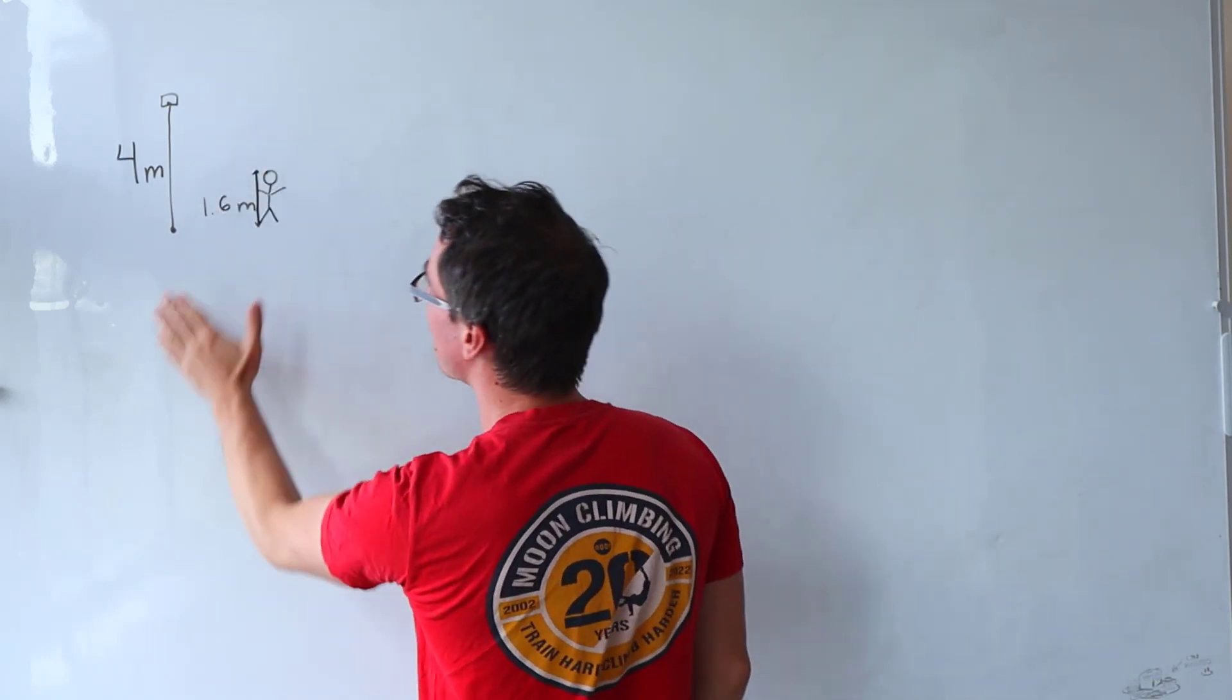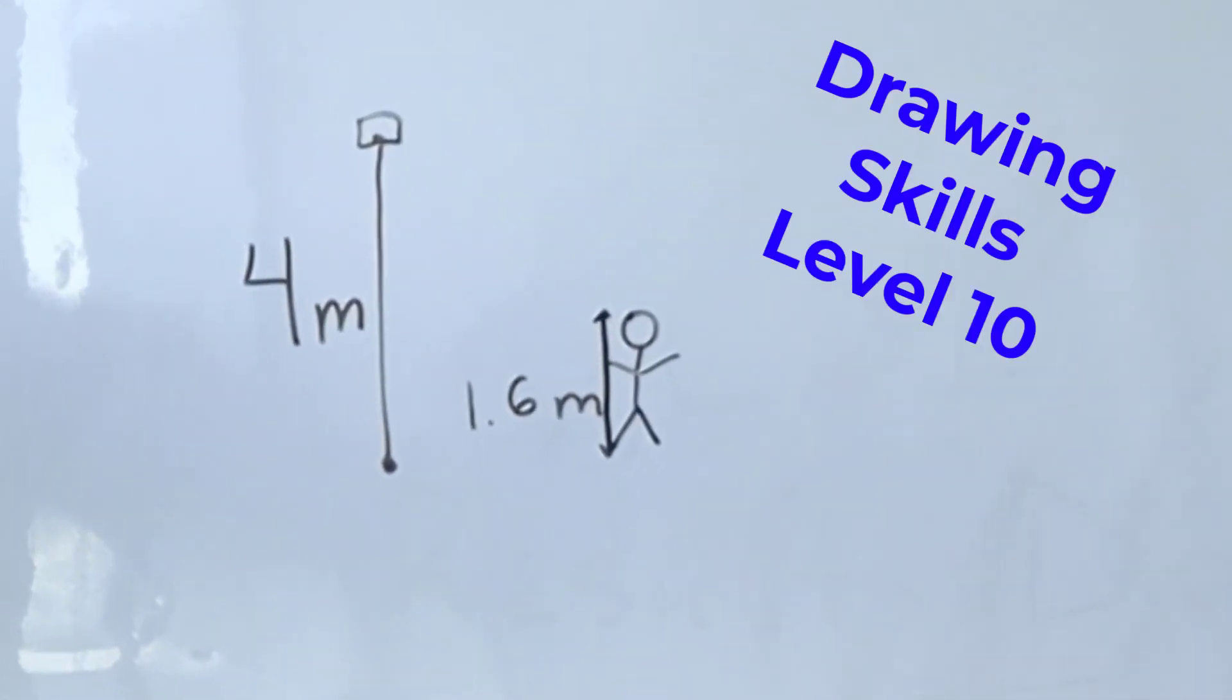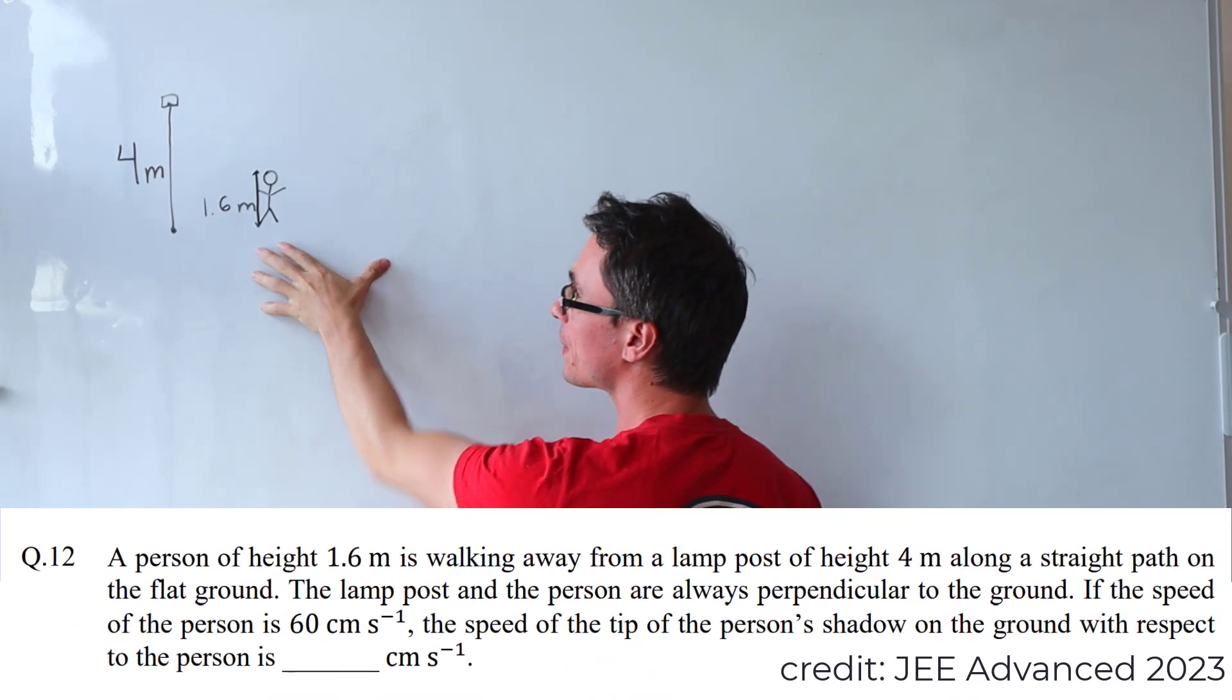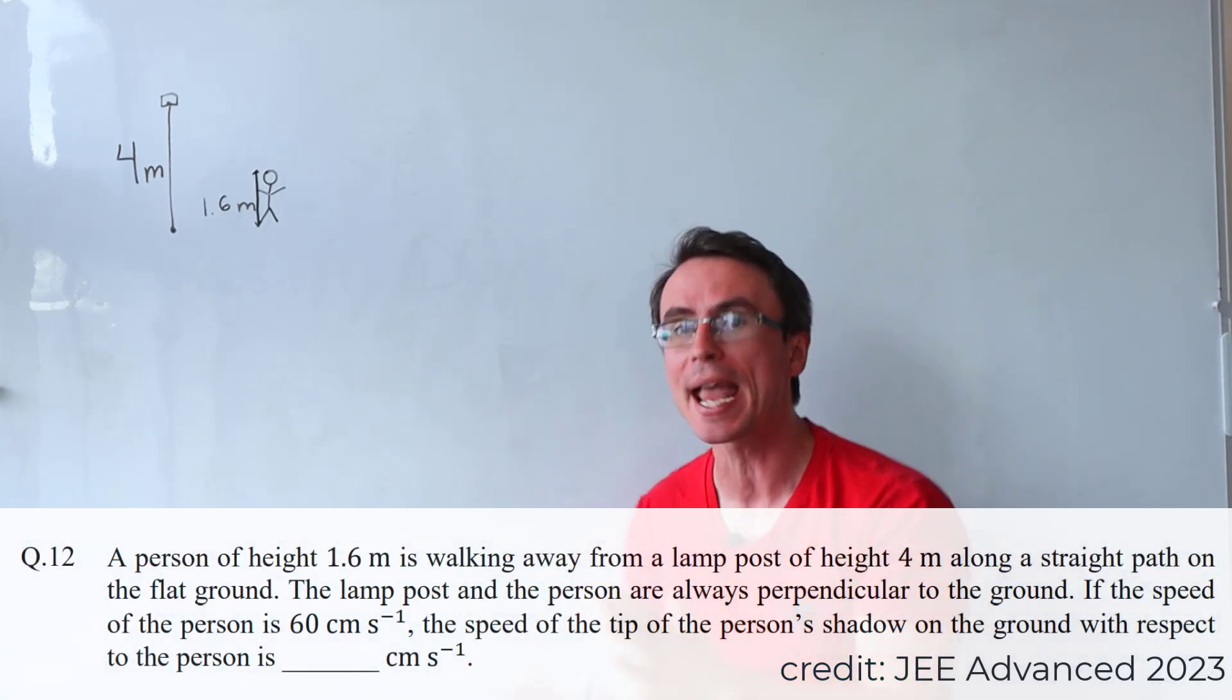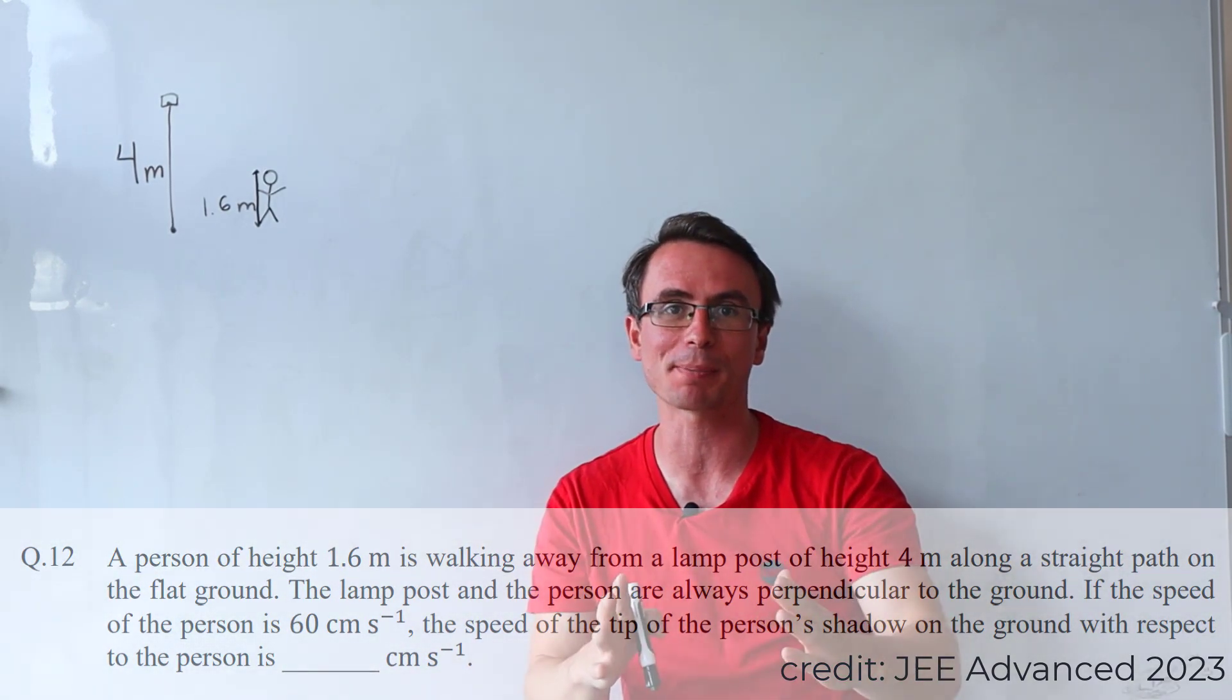We have this lamp pole that is 4 meters high and we have this person here that is 1.6 meters tall and it's moving this way at 60 centimeters per second.